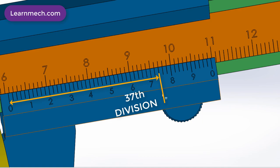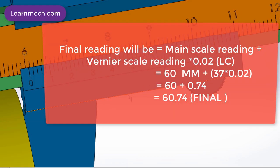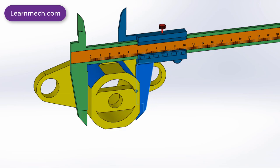If we put this value in the formula, that is main scale reading plus Vernier scale reading into least count, we can get the final value that is 60.74 mm.